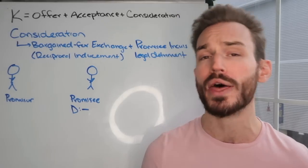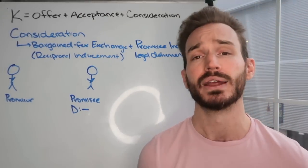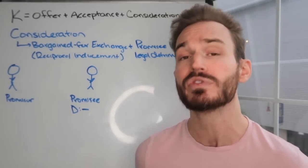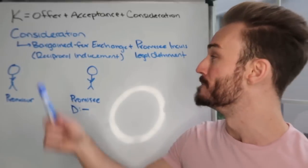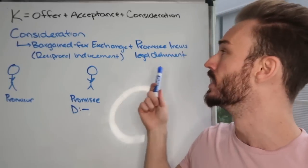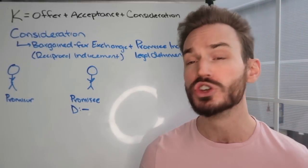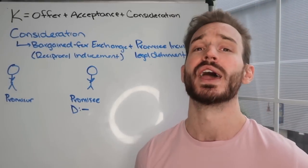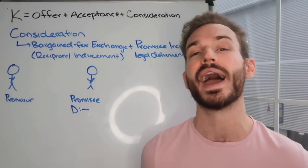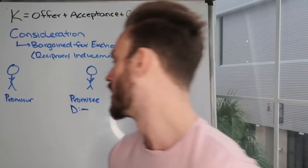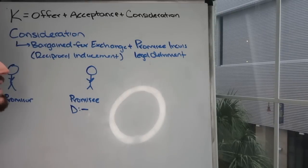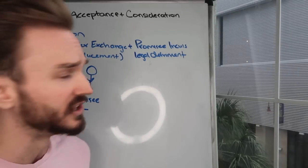So how do we show whether or not the agreement is supported by consideration? Most courts say we have consideration when there is a bargain for exchange that establishes a legal detriment to the promisee. If you can show a bargain for exchange and that the promisee is incurring a legal detriment, then you're going to have consideration in most courts.